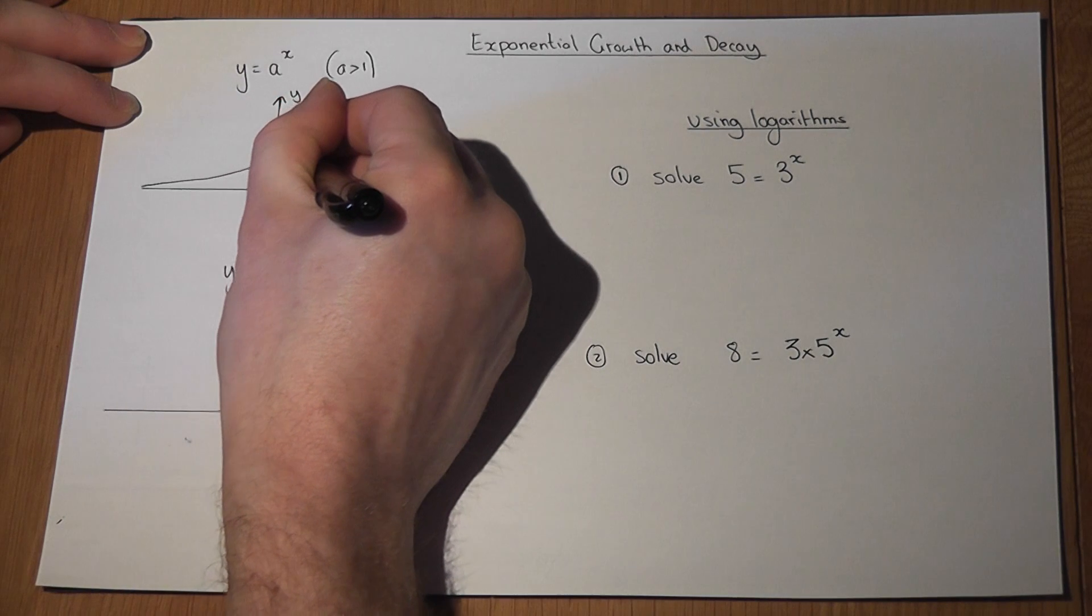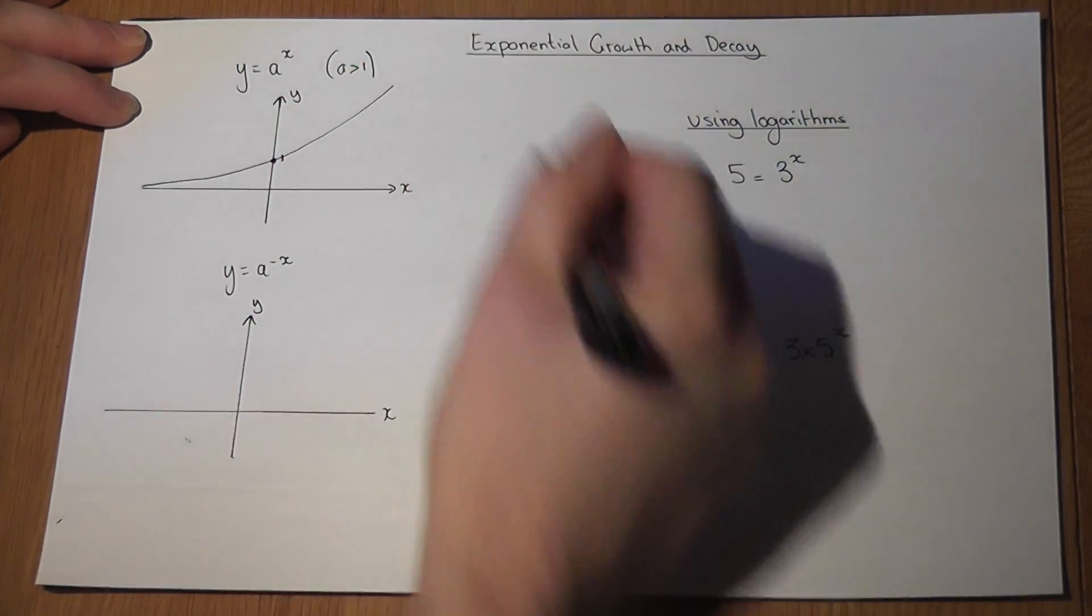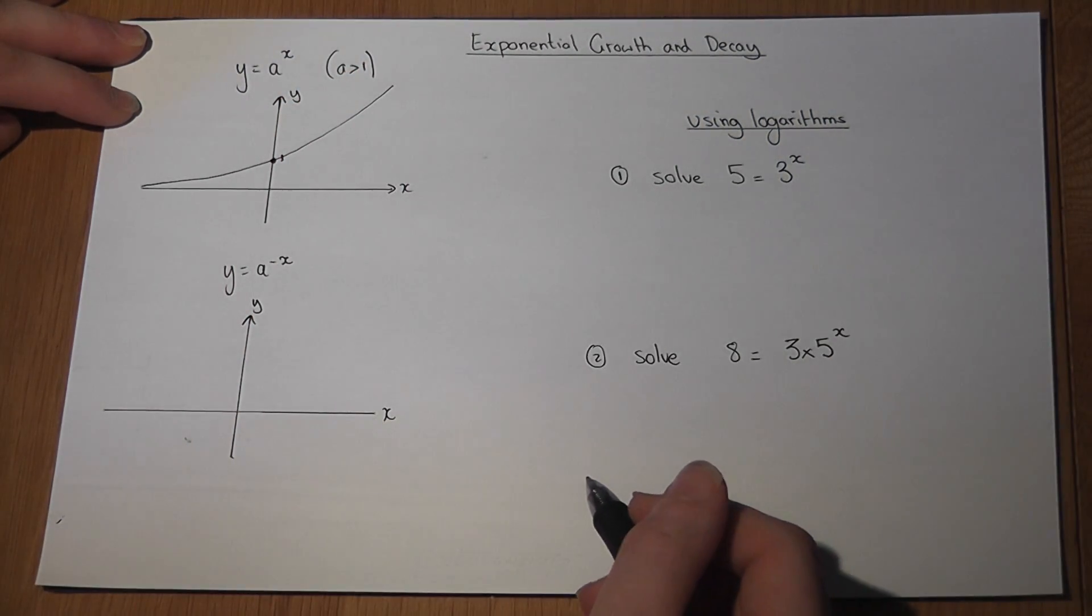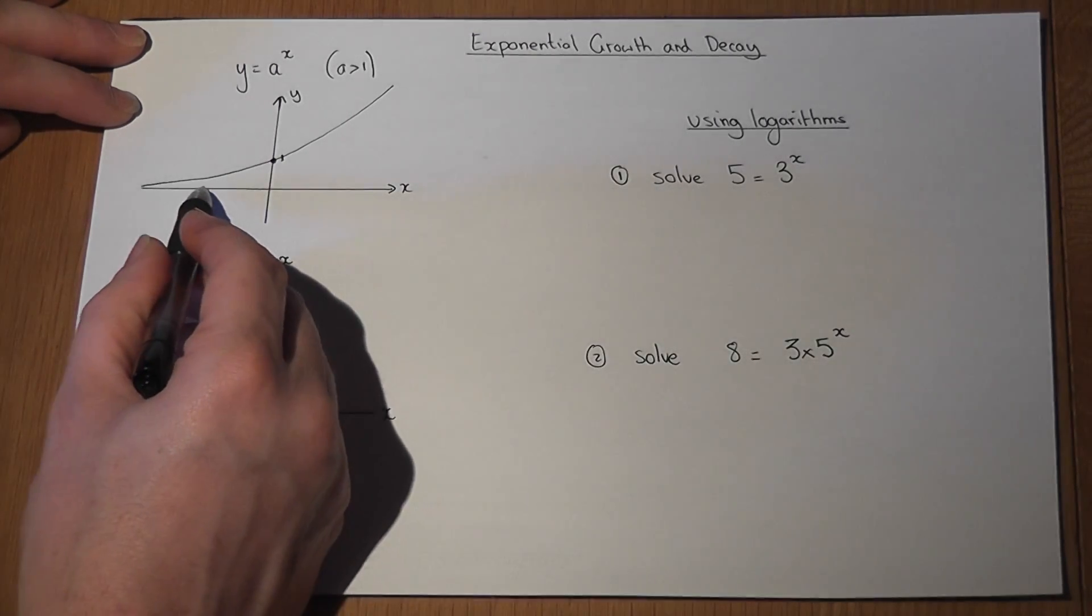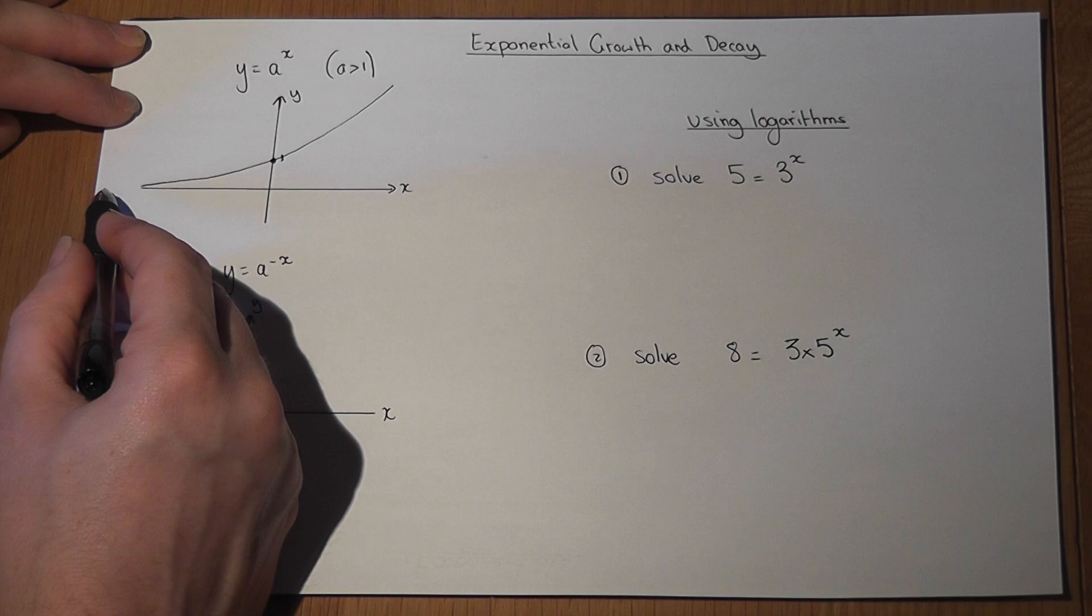It gets steeper and steeper like so. That's called exponential growth and it asymptotes towards the x-axis but never quite gets there.